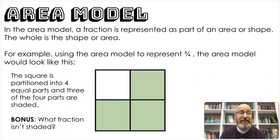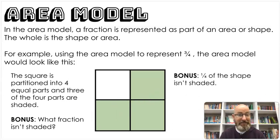When you see it like this, the square is partitioned into four equal parts. That's where the denominator comes from. There's four equal parts. And three of those four parts are shaded. That's where the three comes from. So here's a bonus question. What fraction isn't shaded? One-fourth isn't shaded. That's right. One of the four equal parts is not shaded. So three-fourths and one-fourths would be a whole or four-fourths.